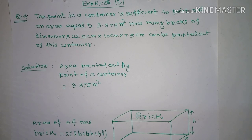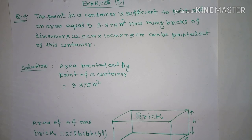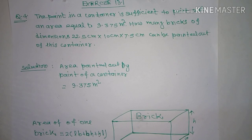Question number 4 states that the paint in a container is sufficient to paint out an area equal to 9.375 meter square. How many bricks of dimension 22.5 cm into 10 cm into 7.5 cm can be painted out of this container?